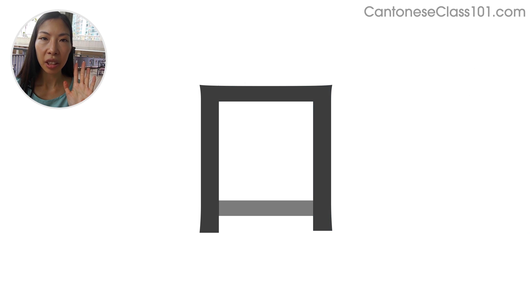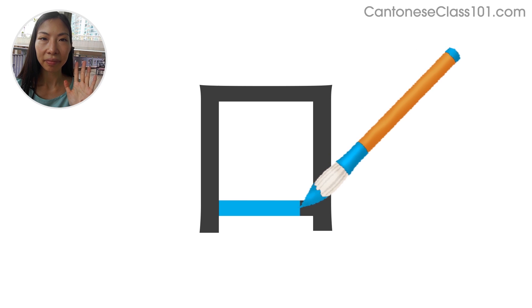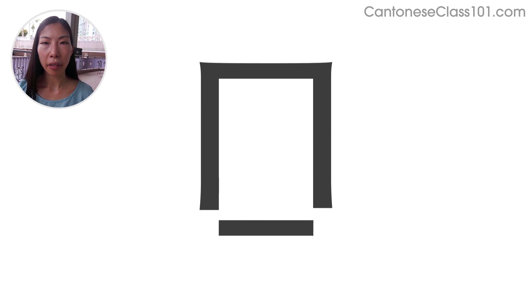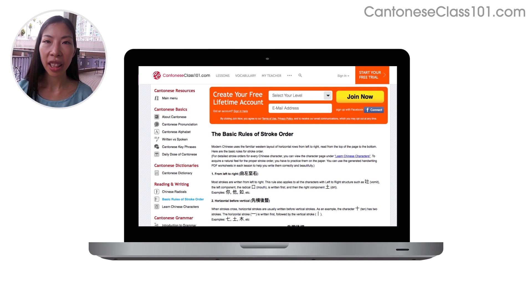Finally, we finish with the bottom horizontal stroke, drawn from left to right. So despite the number of lines in the character, 口 is actually comprised of three strokes. To see the detailed stroke orders for writing a Chinese character, check out the Learn Chinese Characters page under Cantonese Resources at the top of our site. To acquire a natural feel for the proper stroke order, you have to practice by writing them on paper. Please make use of the Hanzi close-up PDF worksheets in each lesson to help you write them correctly and beautifully.